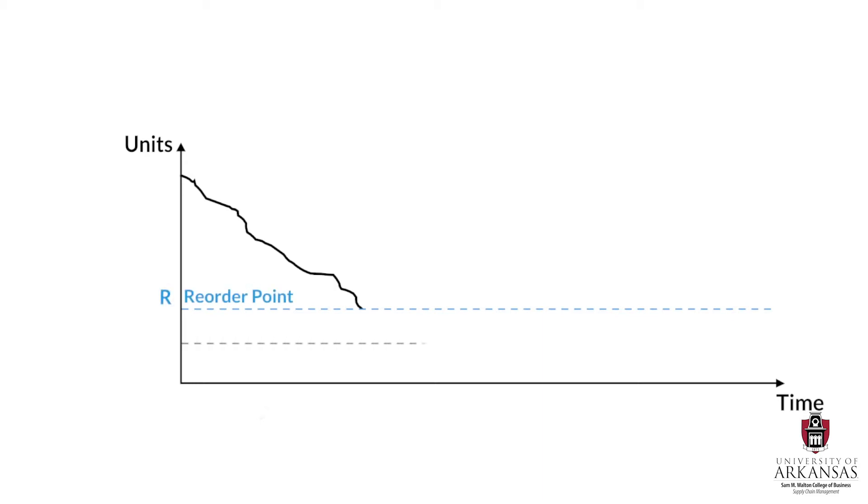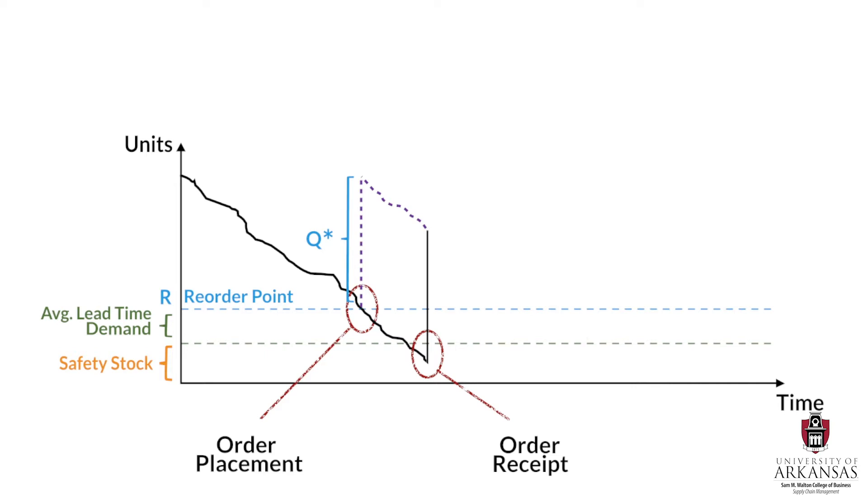This reorder point R is the sum of average lead time demand and safety stocks, and it is the inventory position at which a new order is placed. This order will be of size Q, which simply denotes the order quantity. And after some time, we will receive this order, and it will be added to our inventory. The time between order placement and order receipt is the lead time. And then a new order cycle begins.